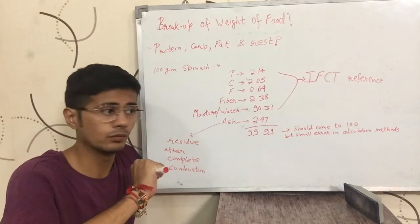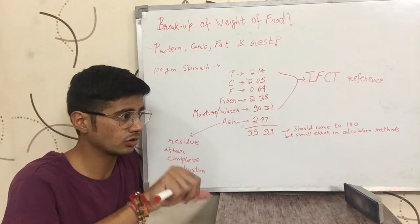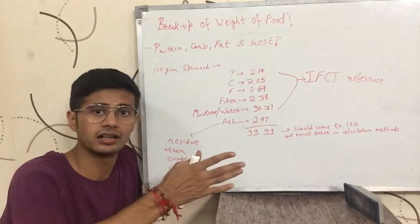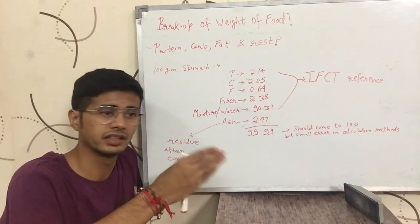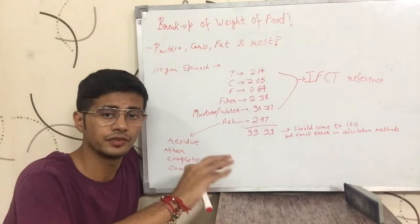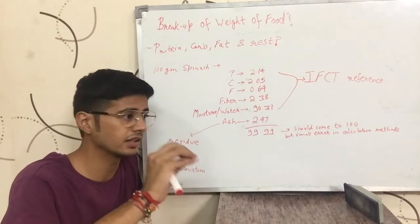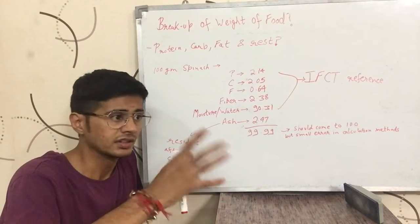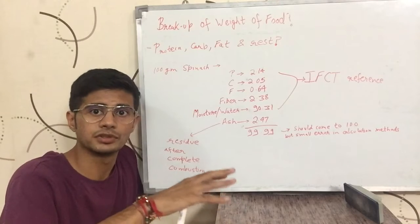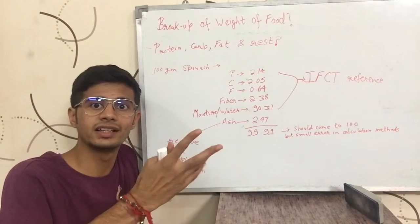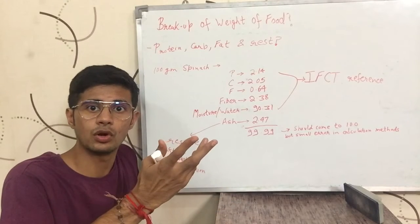So you might have come across this thing: let's say there are 100 grams of almonds — they have 18 grams protein, 14 grams something, 59 grams fat and 3 grams carbohydrate. This sums up to 80 grams. So where has the rest 20 grams gone?